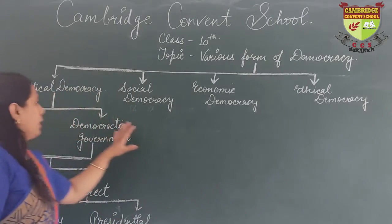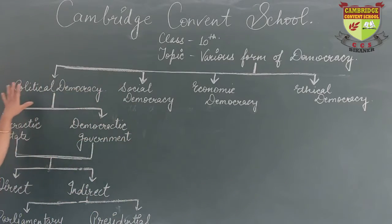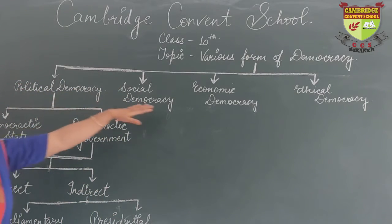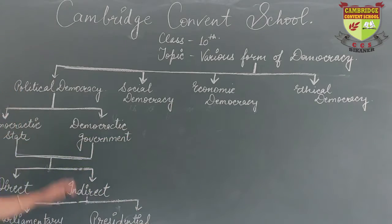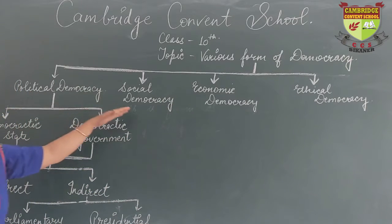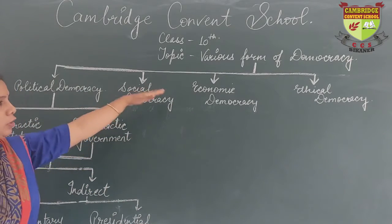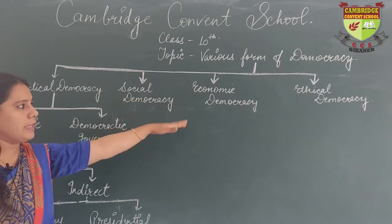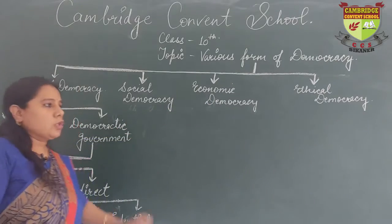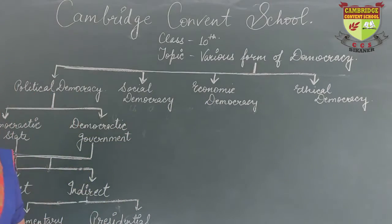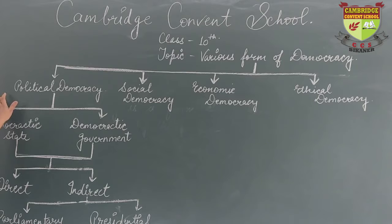So basically there are four types of democracy. First is political democracy, second is social democracy, third is economic democracy, and fourth is ethical democracy. Let us understand first what is political democracy.